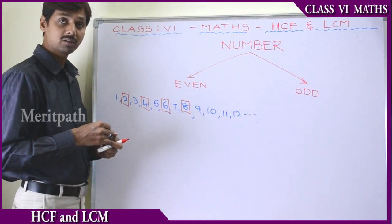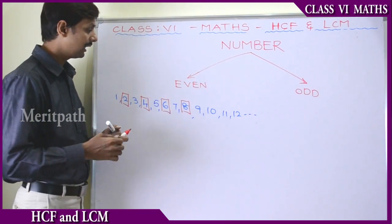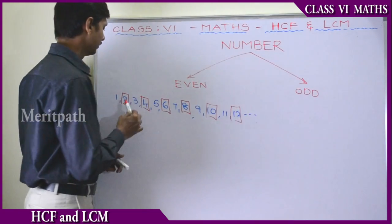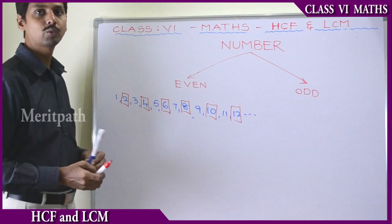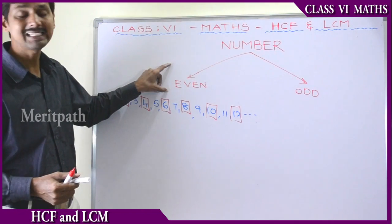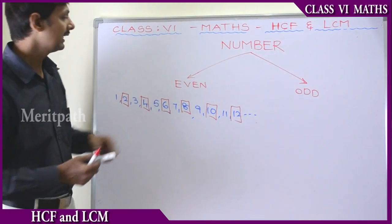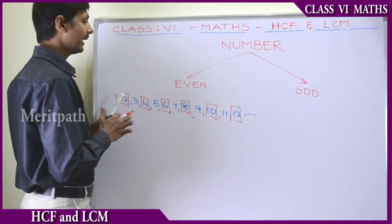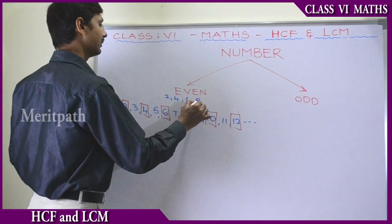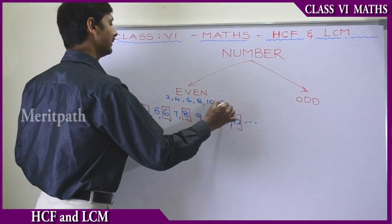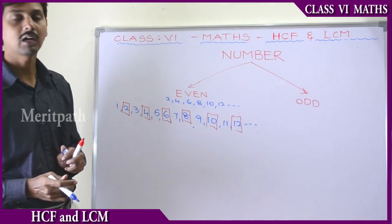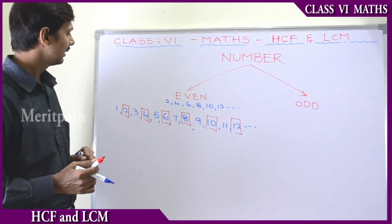We have understood that some numbers are divisible by 2. Those are 2, 4, 6, 8, 10, 12, and so on. These numbers are particularly called even numbers. Even numbers are 2, 4, 6, 8, 10, 12, and so on — which are divisible by 2.